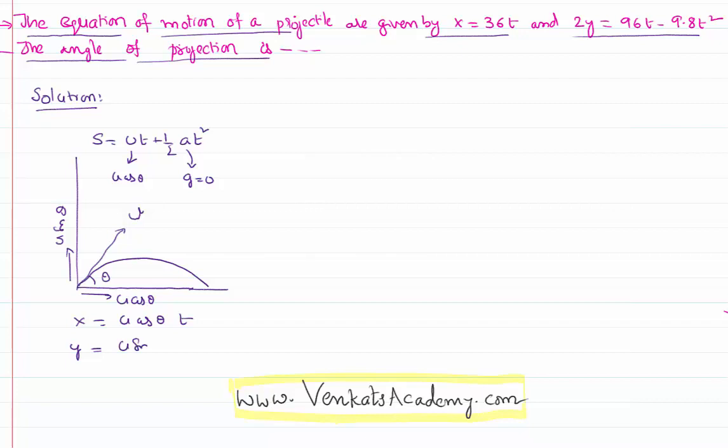Similarly, y will become u sin theta into t in the place of u sin theta. A is minus g because you are throwing the body in upward direction whereas the gravity is acting in downward direction. So these are the standard equations for x and y.